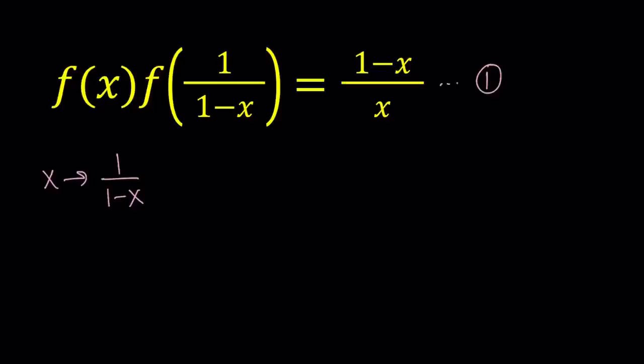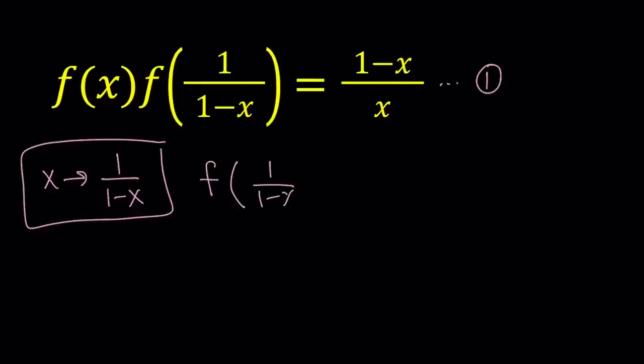It kind of makes sense because we have f of 1 over 1 minus x. So if you replace x with 1 over 1 minus x, you're going to be getting something that we already have. So let's see what happens. I'm going to get from here f of 1 over 1 minus x, and now I need to replace this x with 1 over 1 minus x.